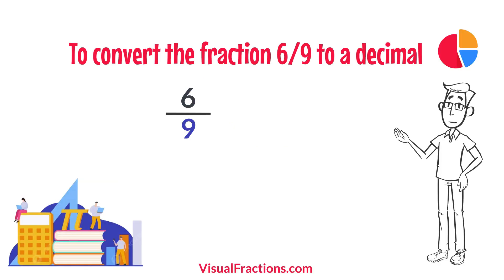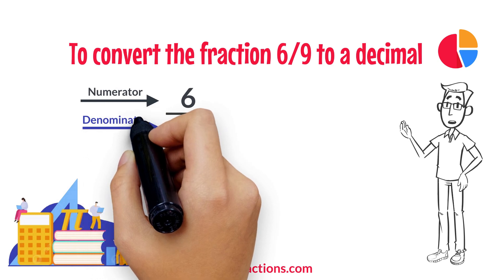To convert the fraction 6 ninths to a decimal, all we need to do is divide the numerator, the top number, by the denominator, the bottom number.